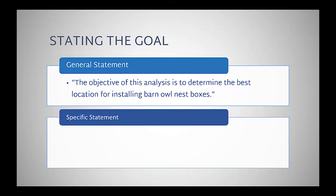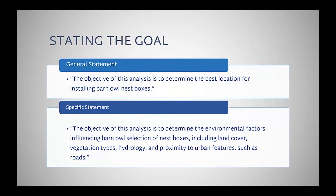Instead, you might use the following wording: The objective of this analysis is to determine the environmental factors influencing barn owls' selection of nest boxes, including land cover, vegetation types, hydrology, and proximity to urban features such as roads. By framing the problem with a detailed statement, you begin to solidify what your model might look like and what information you will need to build it.